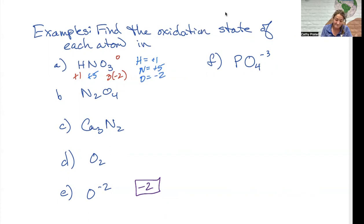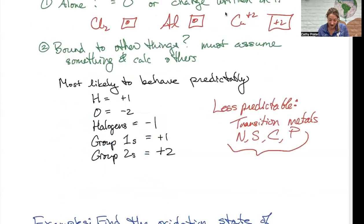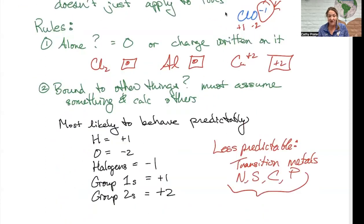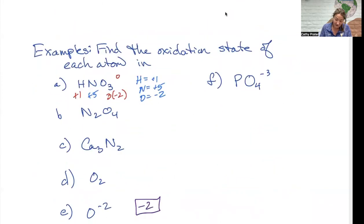Okay, taking a look at our next example, N2O4. I'm going to assume oxygen is better behaved. Again, this is my hierarchy of rules. So if I have four oxygens and they total to negative eight, my two nitrogens must be positive eight. Each nitrogen is positive four. When I ask you to express your answer, I want you to tell me each atom, not the total of each element.